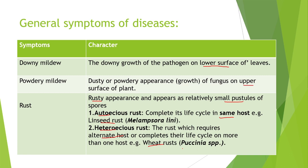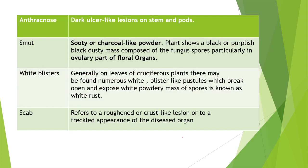Next is anthracnose disease: the common symptom is dark ulcer-like lesions on stem and parts. Next disease is smut: a sooty and charcoal-like powder appears, and the plant shows a black or purplish-black dusty mass composed of fungal spores, particularly in the ovulary part of the floral organ.